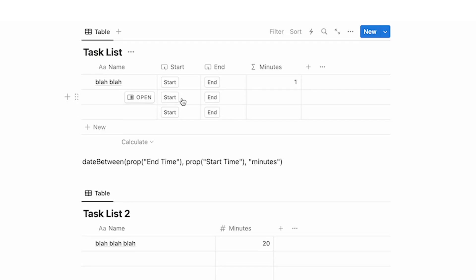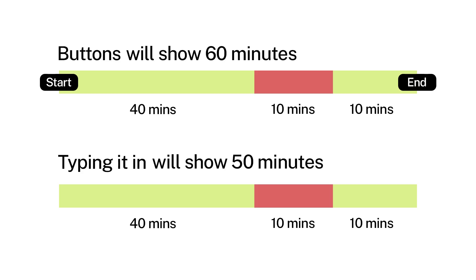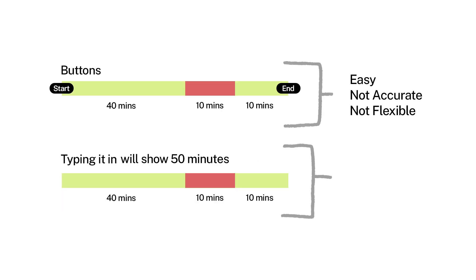Another reason is the timer counts every single second very specifically. Let's say you work for one hour but got distracted for 10 minutes — if you're manually writing it in you can just enter 50 minutes, but the automatic timer will strictly say 60 minutes and you can't change it. So even though doing it manually might sound more annoying, it's actually more flexible and you'll probably get more accurate answers.